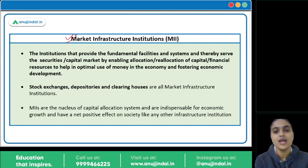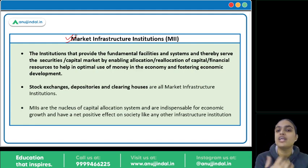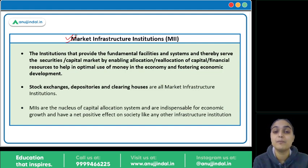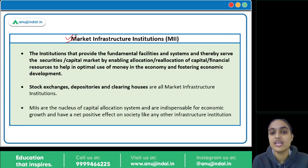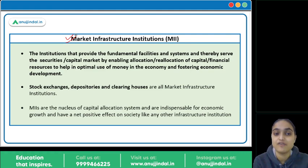We need certain facilities and systems for our capital market: the funding to raise, the funding to utilize so that the economy grows, and economic development. The institutions that facilitate this — providing the necessary systems that help the securities market and capital market to allocate and re-allocate money and financial resources — are the MIIs. Those institutions that help determine where money is raised, where it is used, and provide those facilities are our Market Infrastructure Institutions.